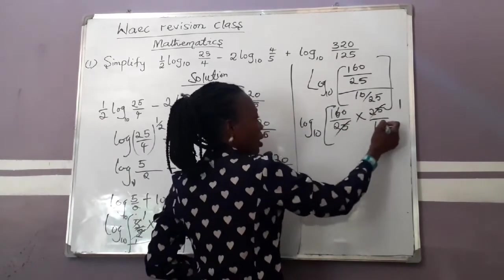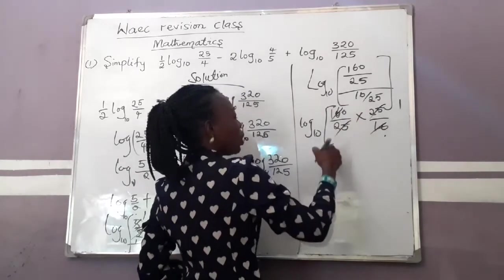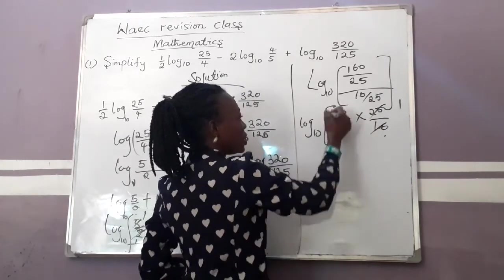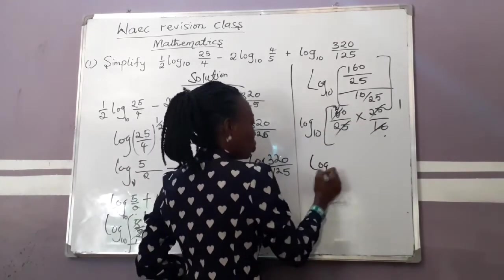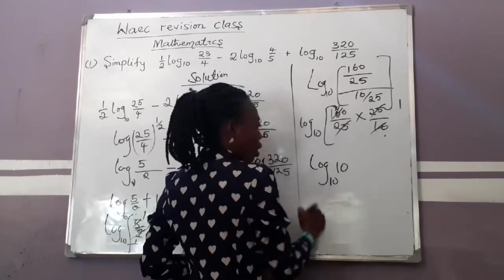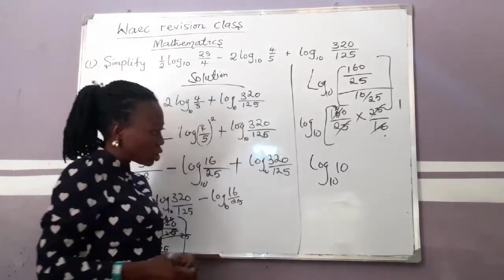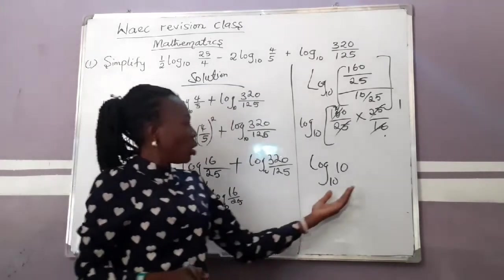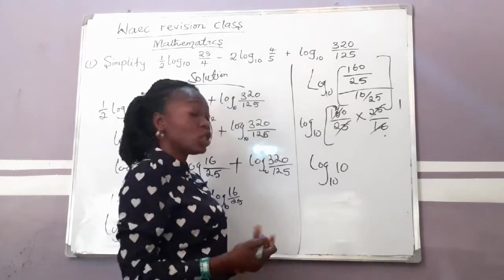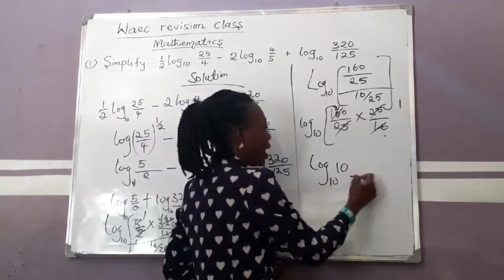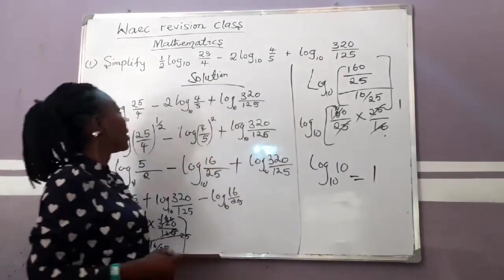The 25s cancel each other. 160 divided by 16 gives 10. So we have log base 10 of 10. And remember the law of logarithms: log of a number to the same base equals 1. So our final answer becomes 1.